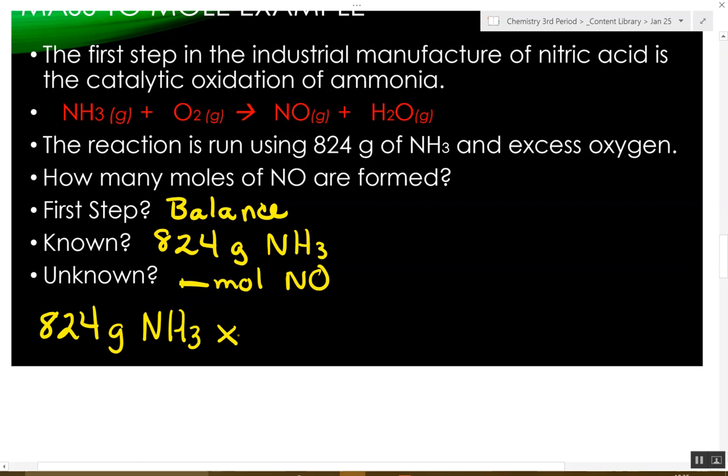Now, the first thing I need to do is get rid of grams to get to moles. So what I'm going to do is multiply by the inverse of the molar mass of ammonia.